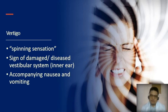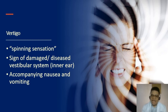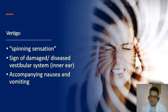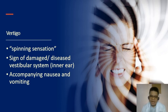Vertigo presents as a spinning sensation and is a sign of a damaged or diseased vestibular system, usually accompanied by nausea and vomiting. Anti-vertigo drugs such as betahistine are used for management. If nausea and vomiting persist, anti-emetics such as metoclopramide may also be administered.